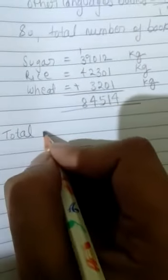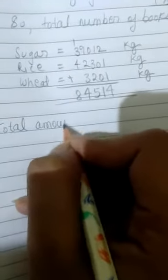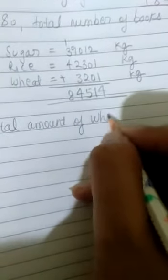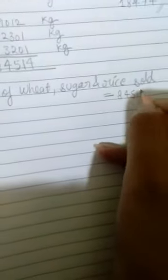Total amount of wheat, sugar and rice sold is equal to how much? 84,514 kg. Okay?